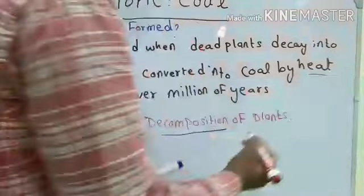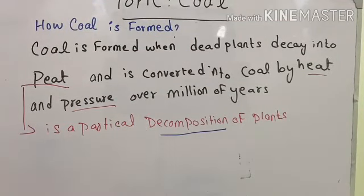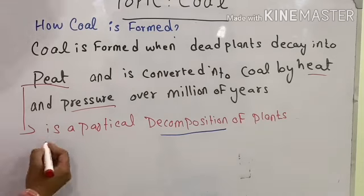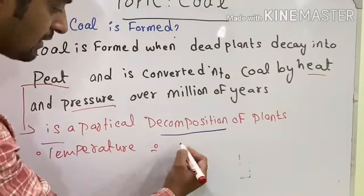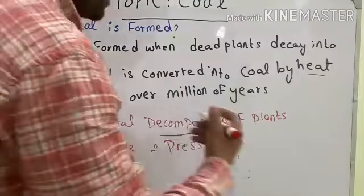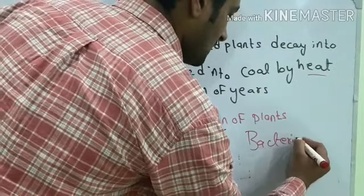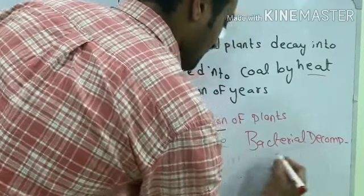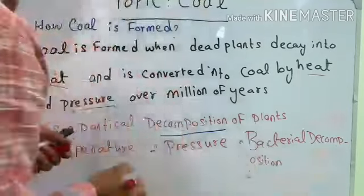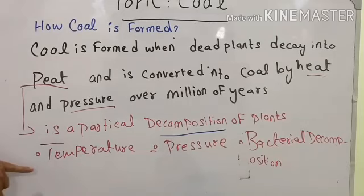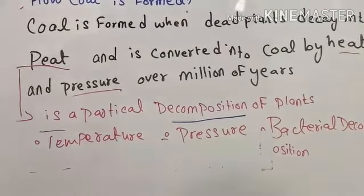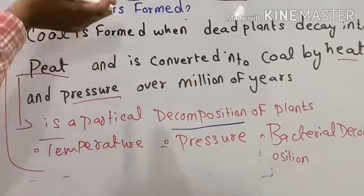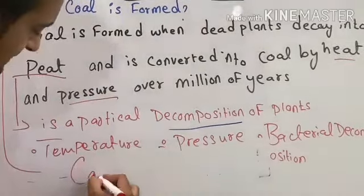There are three certain factors that help in the formation of coal. The first factor is temperature, the second one is pressure, and the third one is bacterial decomposition. In simpler terms, we can call this whole process carbonization.